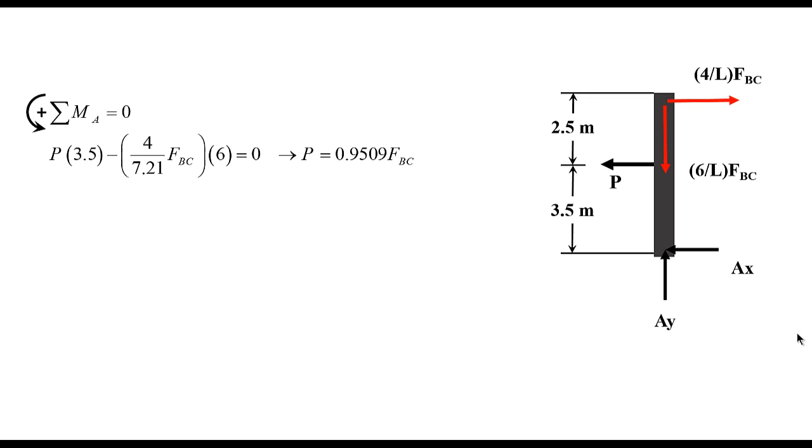So, P is this percentage of FBC. Now, all we need to do is just use the value of FBC we obtained previously, to obtain a maximum value of P.